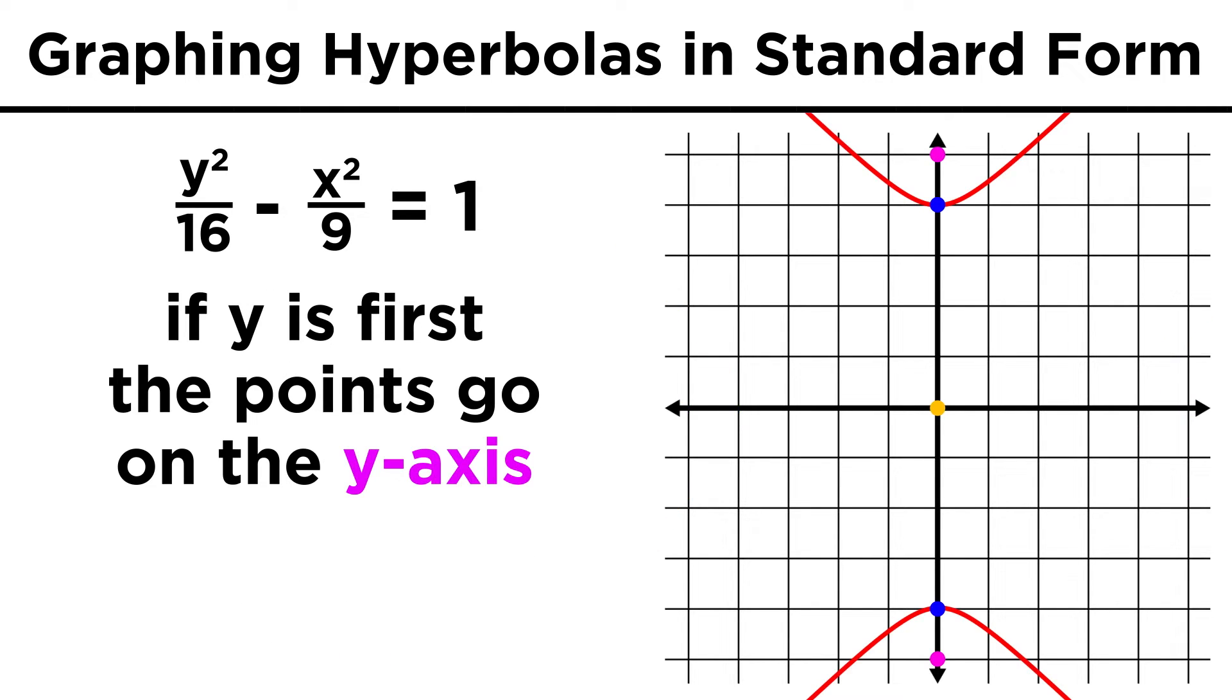If the x and y terms were reversed, we would have a similar situation, except that now the transverse axis is vertical, but the distance to the vertices and foci will remain the same.